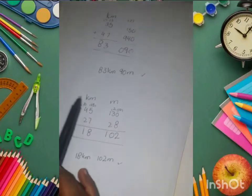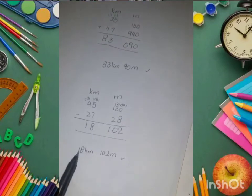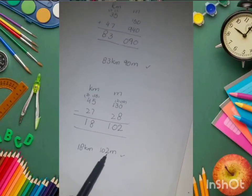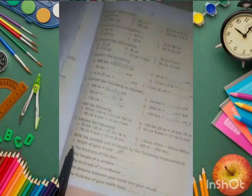3 minus 2 equals 1. The answer is 18 kilometers 102 meters.